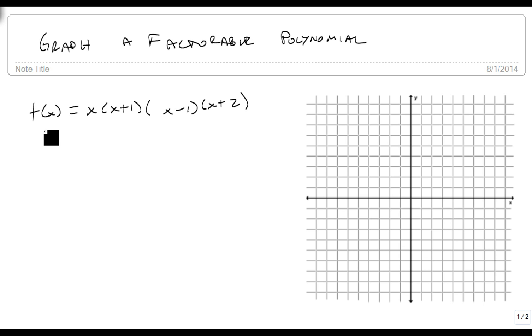And there's a couple of things that we need to be able to graph. First, we need to know end behavior. Second, we need to know the y-intercept. Third, we need to know the zeros with their multiplicities.